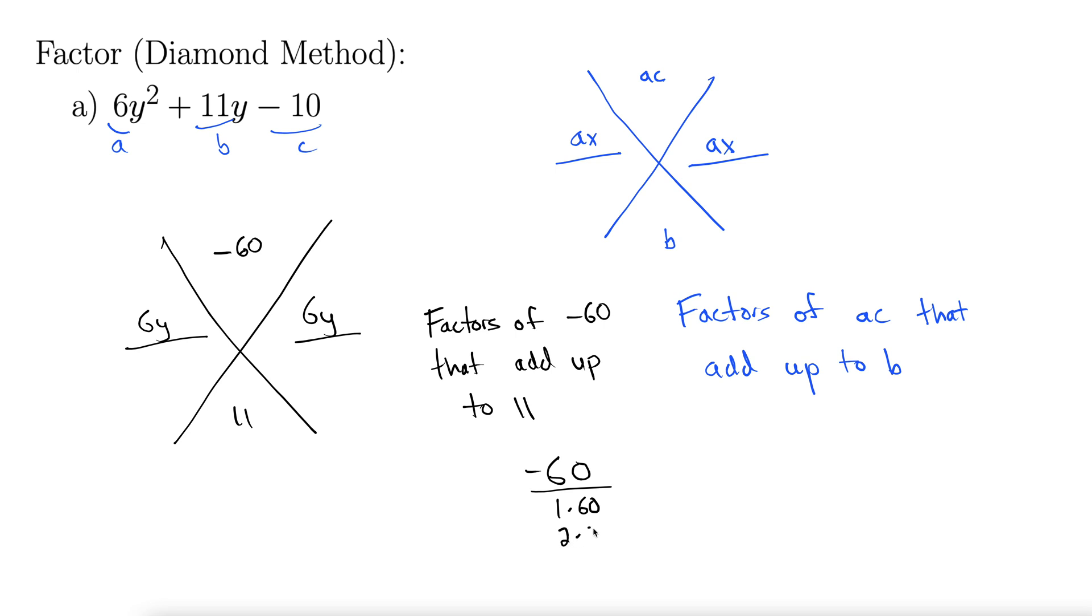How about 2 and 30? No, I can add and subtract those all day, I'm not going to get 11. 3 and 20, we're getting closer. Because I could do 20 minus 3 and we get 17. 4 and 15. There we have it, because 15 minus 4 is 11.